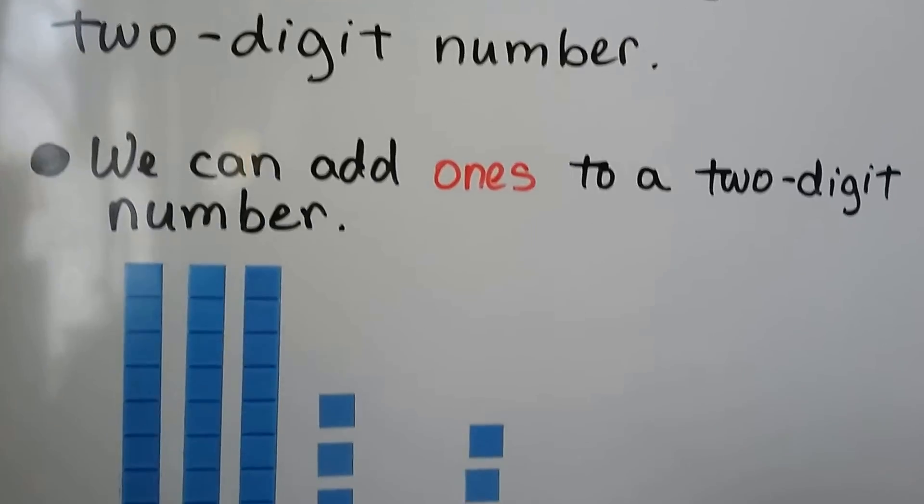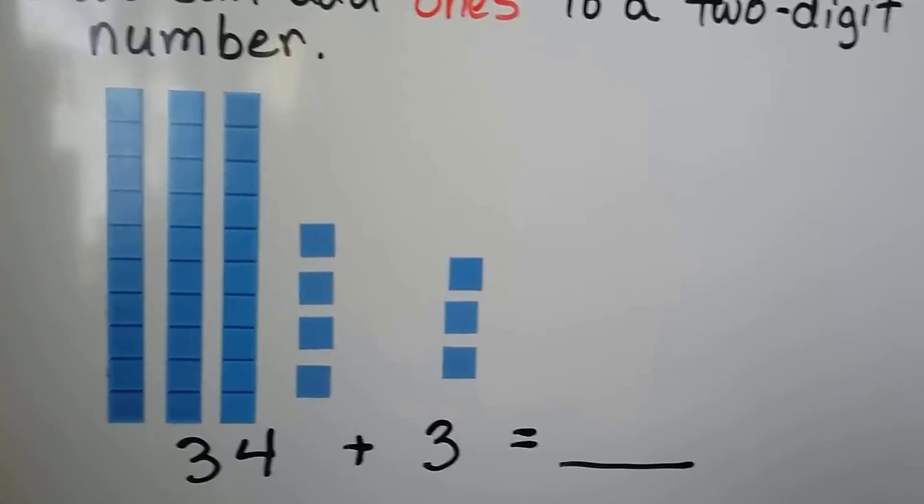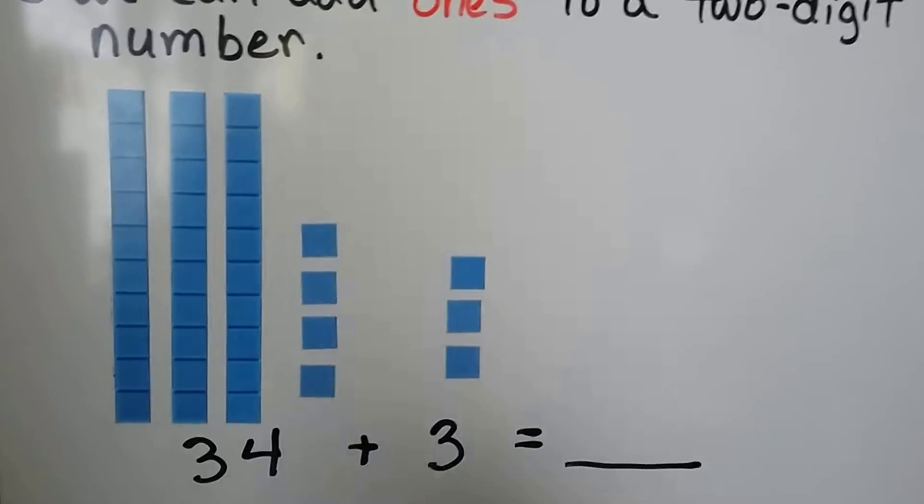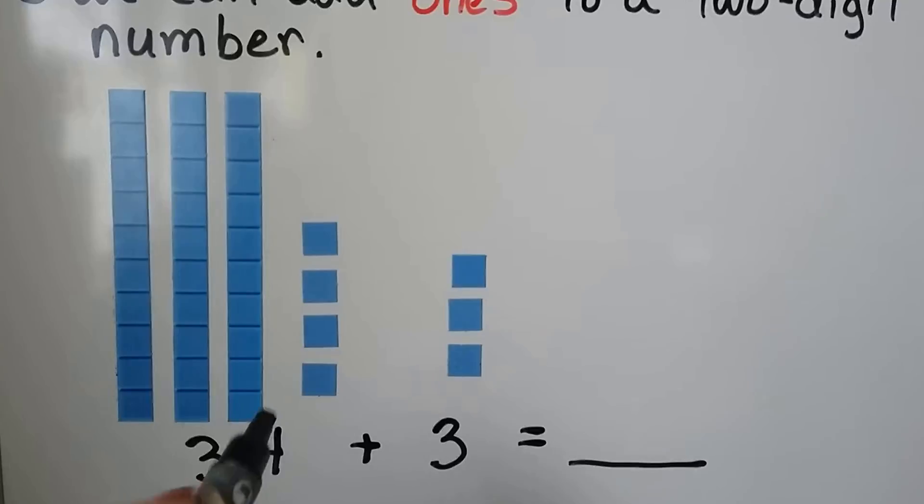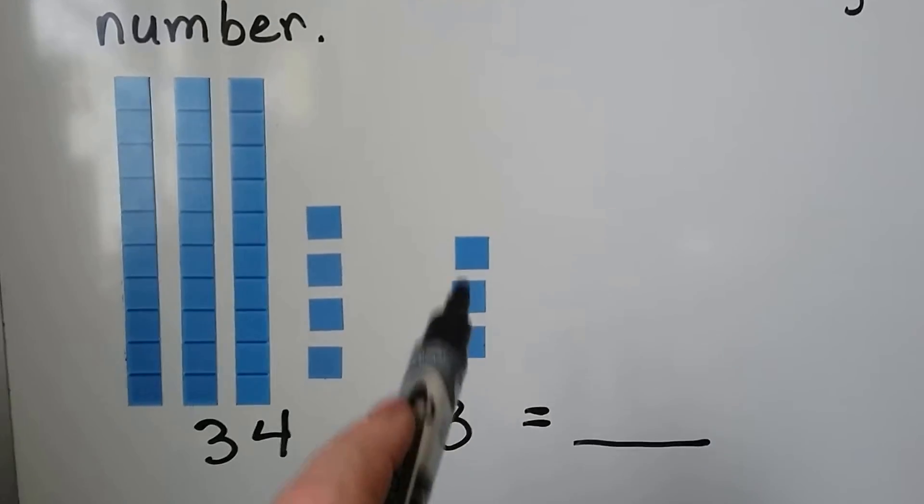We can add 1s to a two-digit number using models. We have 34 plus 3. We use 3 rods of 10 and 4 units for 4 ones. We need to add 3.